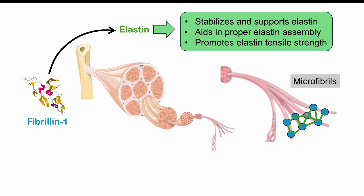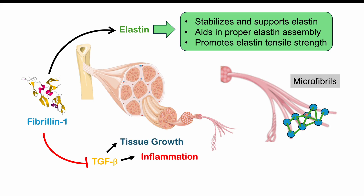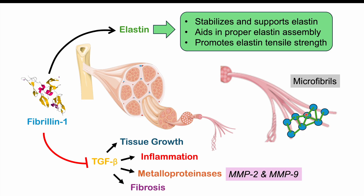Fibrillin 1 has another important function: it suppresses TGF-beta, or tumor growth factor beta, reducing its level. TGF-beta is involved in tissue growth, inflammation, activating metalloproteinases, and fibrosis. If we lose fibrillin 1, we'll have too much TGF-beta activity — too much tissue growth, issues with fibrosis, and inappropriate activation of metalloproteinases, especially metalloproteinases 2 and 9, which are important in some of the issues found in the heart.